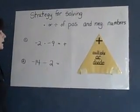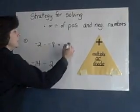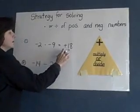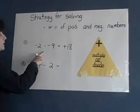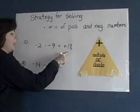Now I simply multiply. 2 times 9 equals 18. My answer is positive 18. A negative times a negative equals positive.